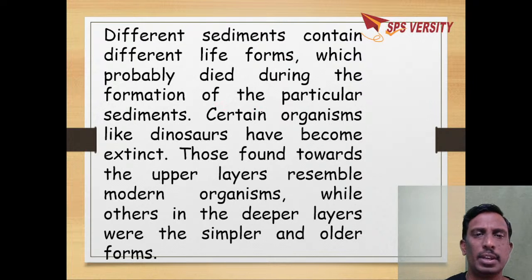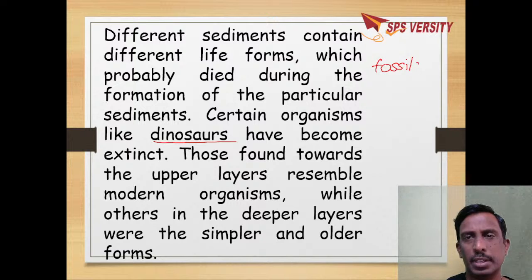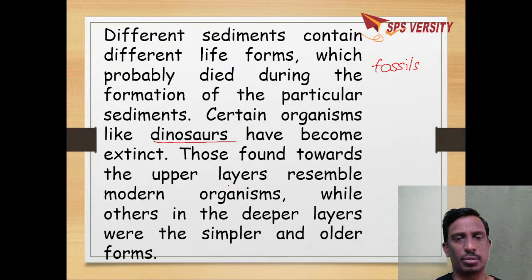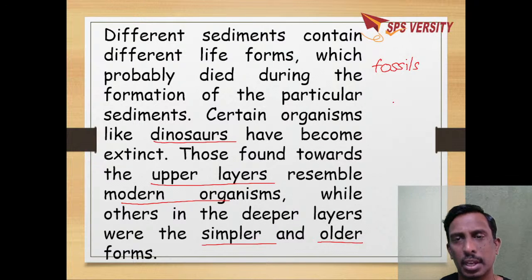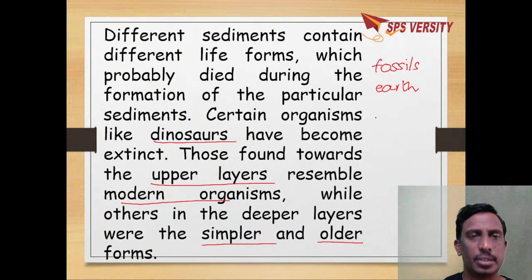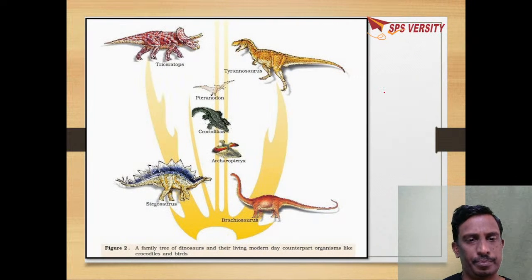When you go on digging the Earth, we can find many organisms' dead bodies — the fossils of dinosaurs and other organisms. Remnants of previous organisms like dinosaurs can be found. Those found towards the upper layers are modern, recently originated. Those found in the deep are simpler and older forms. Earth reveals about many things — the simple forms and the modern forms which originated on Earth.